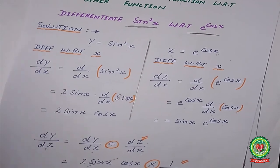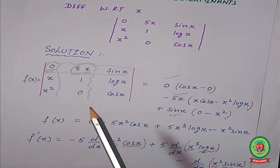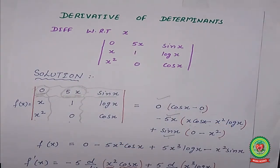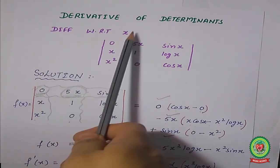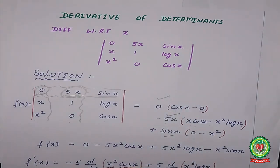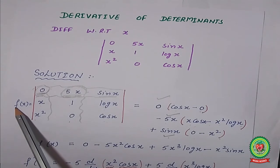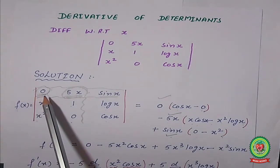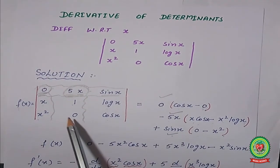Now, one more subtopic: derivative of determinants. We have already done determinants — 2×2 and 3×3. I am taking one example where all statements are in one variable only, so we differentiate with respect to x. A 3×3 determinant is given. According to this rule, you first solve the determinant — find the value of the determinant. At the end, whatever answer you find after evaluating the determinant, you differentiate that function.